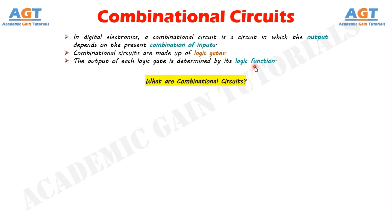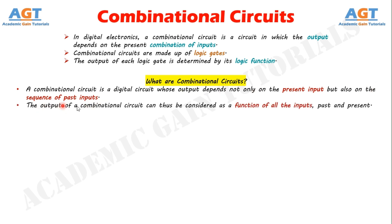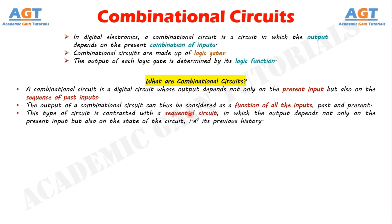What are combinational circuits? A combinational circuit is a digital circuit whose output depends not only on the present input but also on the sequence of past inputs. The output of a combinational circuit can thus be considered as a function of all the inputs, past and present. This type of circuit is contrasted with a sequential circuit, in which the output depends not only on the present input but also on the state of the circuit, that is, its previous history.